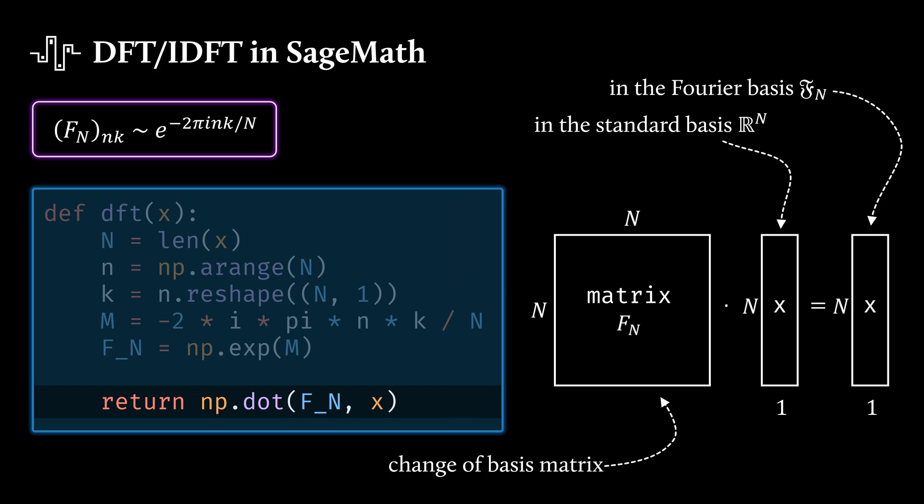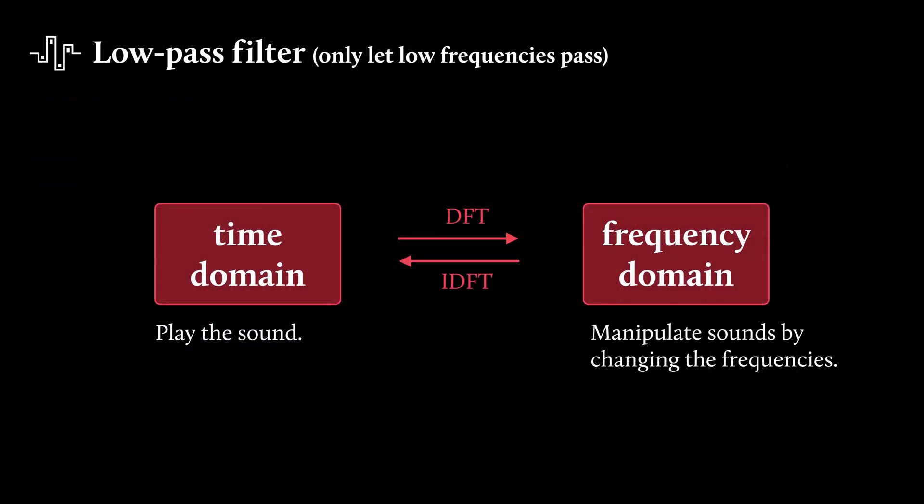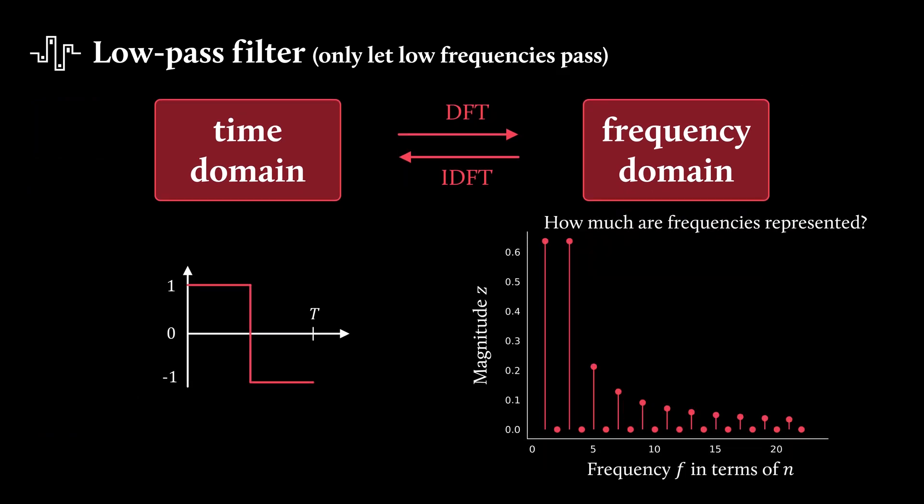Now last but not least, we want to implement a low pass filter as promised. In the time domain, we are able to play the sound. Now with our DFT at hand, we can go to the frequency domain, manipulate the sounds over there by changing the frequencies, and then going back to the time domain via the IDFT, the inverse discrete Fourier transform, to play back the manipulated sound. In order to realize this low pass filter, what we can do is define a cutoff frequency, and for all frequencies above that frequency, just set the magnitude to 0, so that these frequencies don't contribute to the signal anymore.